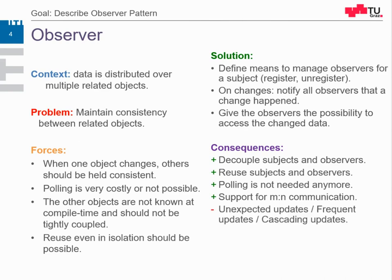However, we have a problem of unexpected or frequent updates. What if the subject updates a million times per second and the observer has to do some really heavy number crunching, using up all the CPU? We should think about having some mechanism to avoid cascading or frequent updates. One solution is synchronous versus asynchronous updates: should the notify method run synchronously or asynchronously? If synchronously, we can ensure consistency. If asynchronously, the system is fast — we don't wait for all observers — but observers might be informed too late and another change could happen in the meantime. We may need some locking so the next change is only possible when all observers have been informed.